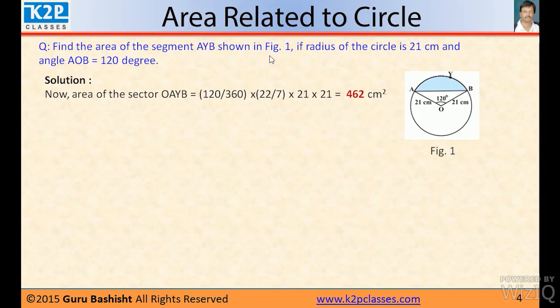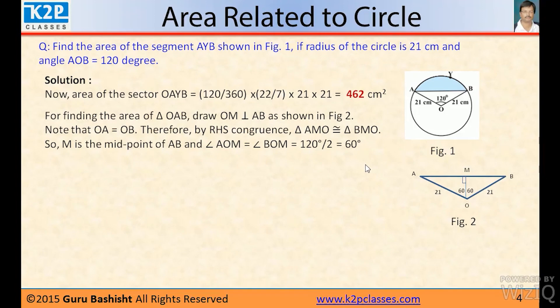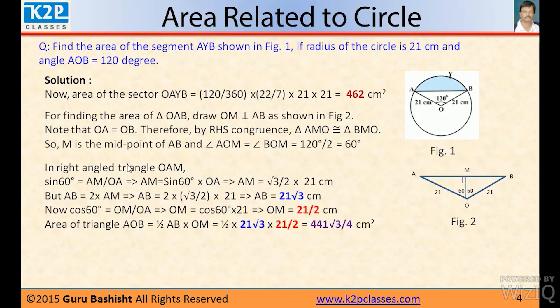Find the area of the segment AB in figure 1 if radius of the circle is 21 cm and this angle is 120°. Solution: area of the sector is 120°/360 × πr², which is 462 cm². But for finding the area of this triangle, we will draw here a perpendicular. So this is 21 and this is 60°. Why is this 60°? Because this is 120°, so it will divide it into equal parts.